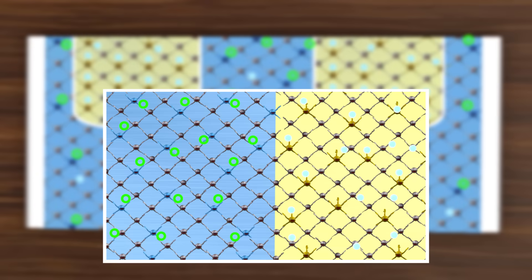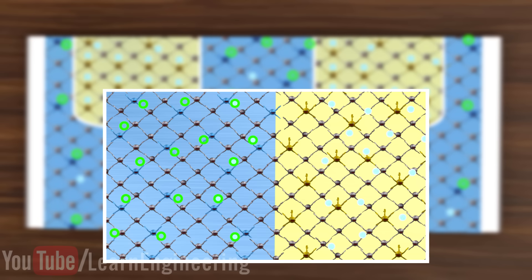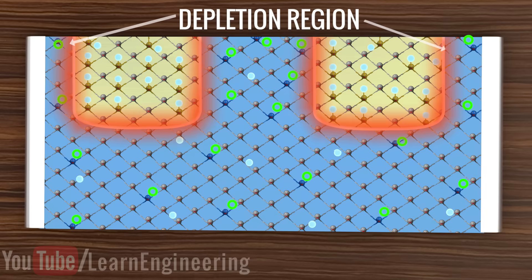Whenever a P-N junction is formed, the excess electrons in the N region have a tendency to occupy the holes in the P region. This means that the P-N junction boundary naturally becomes free of holes or free electrons. This region is called a depletion region. The same phenomenon also happens in the P-N junction of the MOSFET.